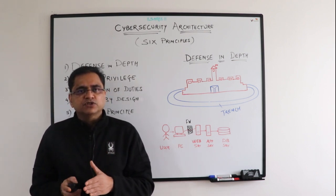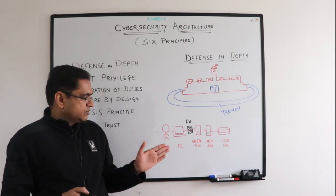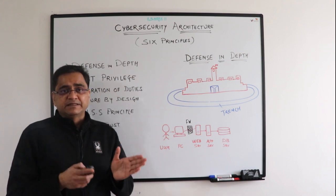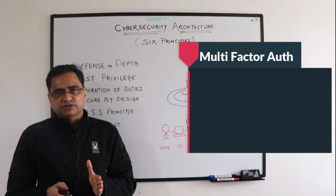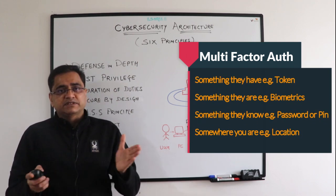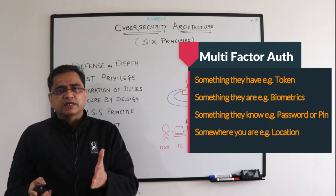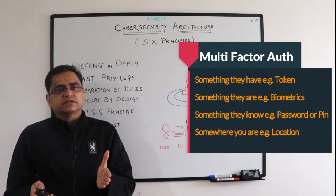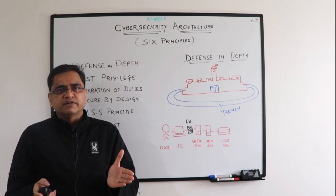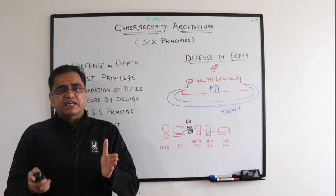Now let's transition into a modern security example. Here we have a user with his own laptop going across a network firewall to get into a web server, then app server, and finally to the database server. For defense in depth in this example, one thing I might do is add multifactor authentication — a system to make sure that this user is who they say they are by asking for something they have (example: tokens), something they are (example: biometrics), something they know (example: password or PIN), or somewhere they are (example: location-based authentication). For a mobile device or endpoint, I might apply mobile device management or endpoint device management software to ensure the security policies set for the organization are followed on that device.